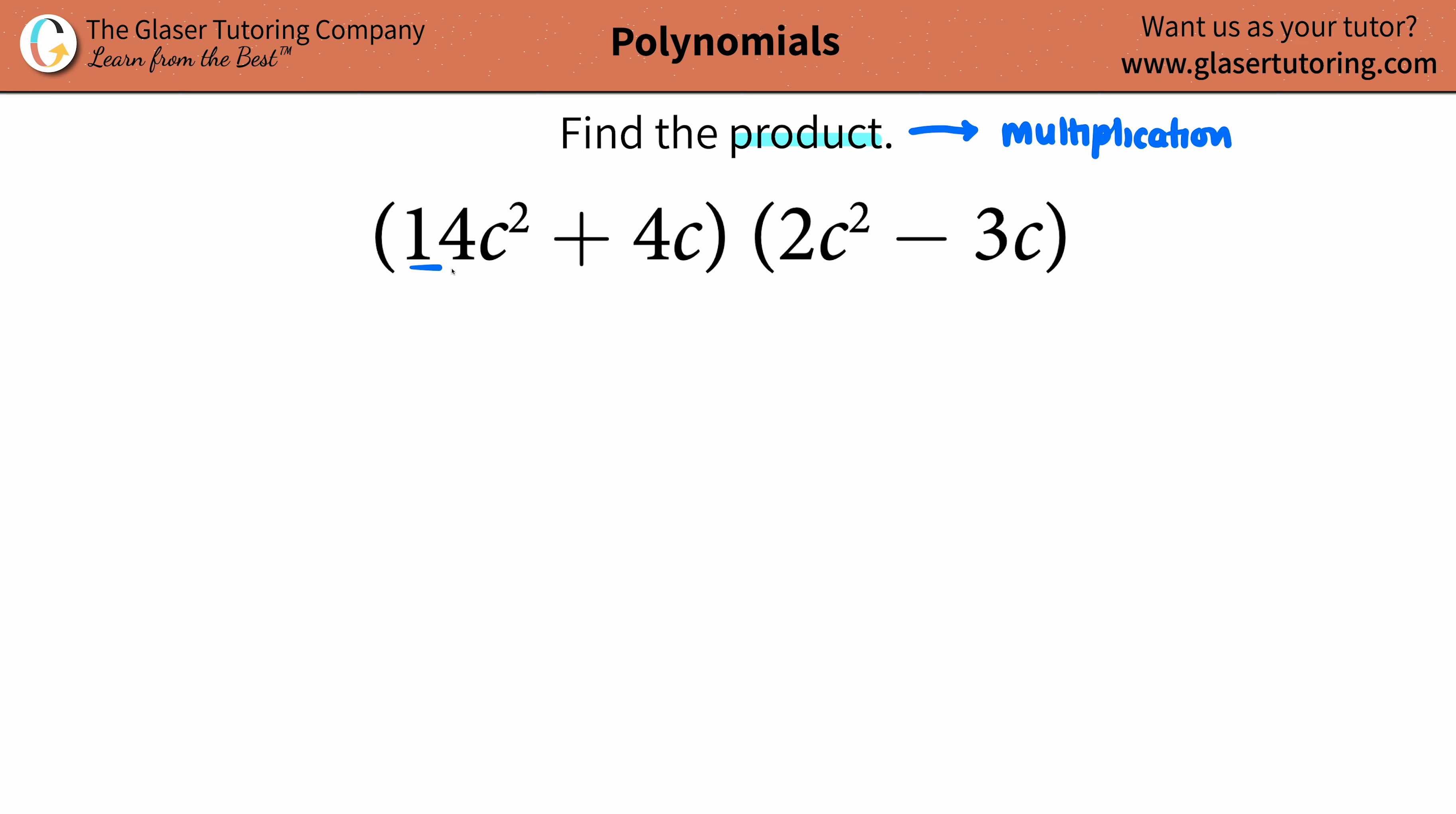In this case, we have in one corner 14c² + 4c, and we must multiply that with 2c² - 3c.